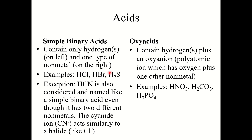Examples include Cl, Br, S, N, I, or F — one type of nonmetal. The only exception is HCN. HCN is considered and named like a binary acid even though it technically has two different nonmetals, because the cyanide anion CN⁻ acts very similarly to a halide. This is the only exception we'll discuss.